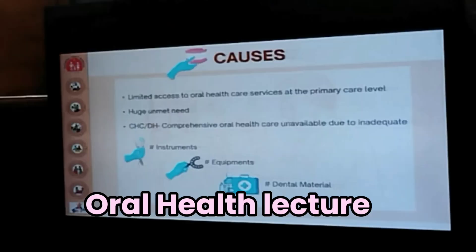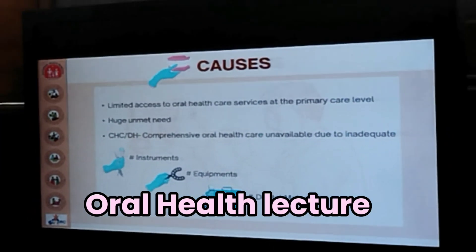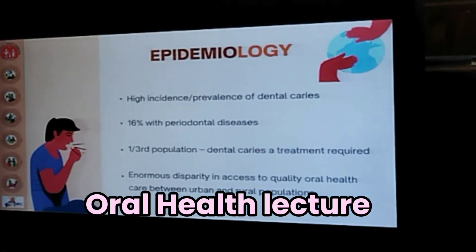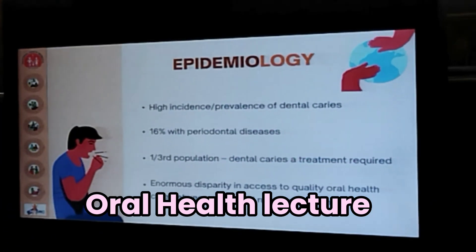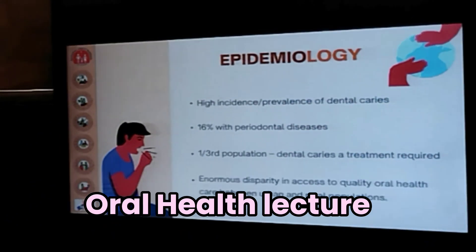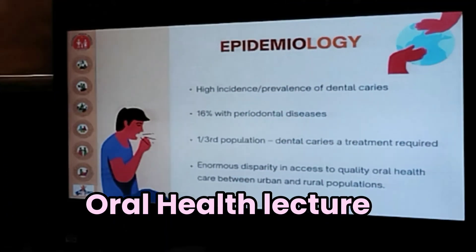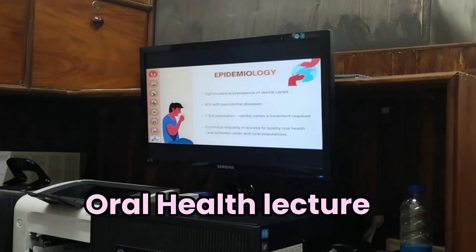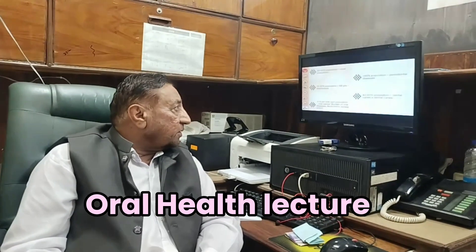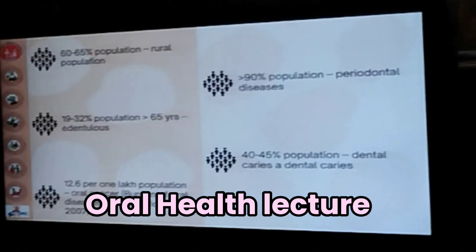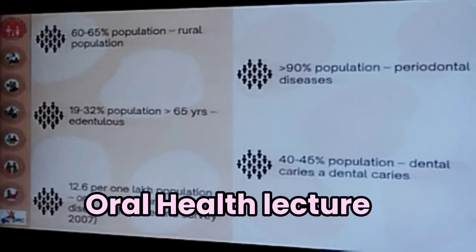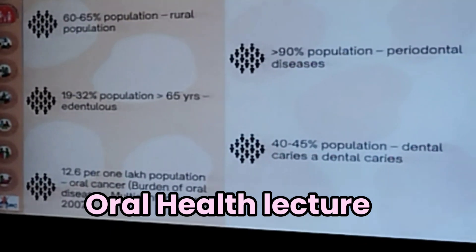Comprehensive oral health care is unavailable and inadequate because instruments, equipment, and dental materials are costly. Epidemiologically, there is high incidence and prevalence of dental caries, 16% with periodontal diseases, and enormous disparity between urban and rural areas. 60–65% of the rural population suffers from periodontal diseases, and 40–45% requires dental care treatment.